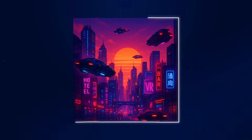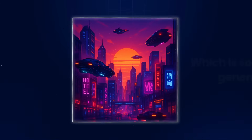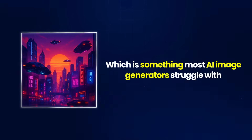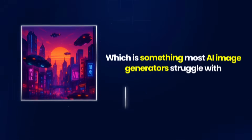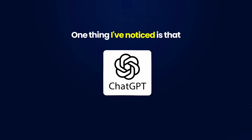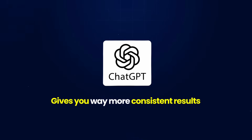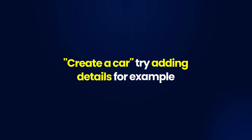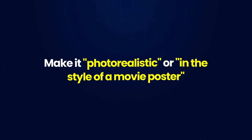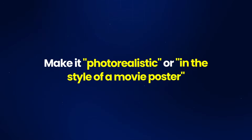And here's what we get — the quality is actually pretty good, and the text is surprisingly accurate, which is something most AI image generators struggle with. ChatGPT gives you way more consistent results when you're specific about the style you want. So instead of just saying 'create a car,' try adding details like 'make it photorealistic' or 'in the style of a movie poster.' The more context you give, the closer it'll get to what you have in mind.